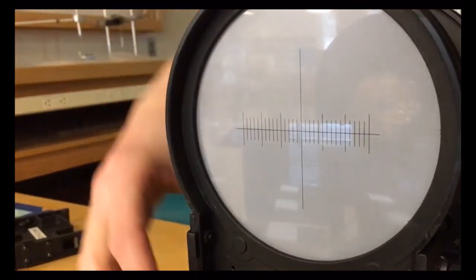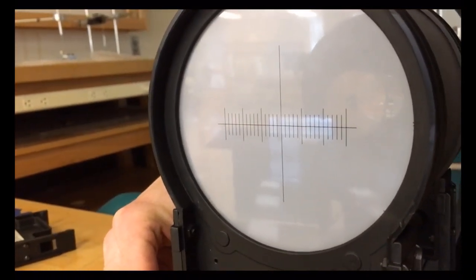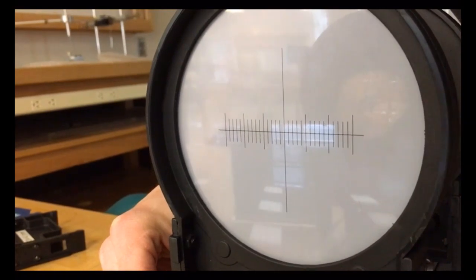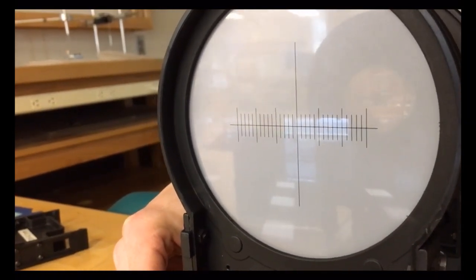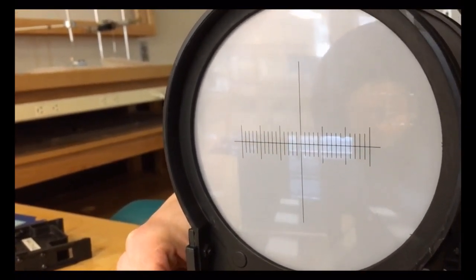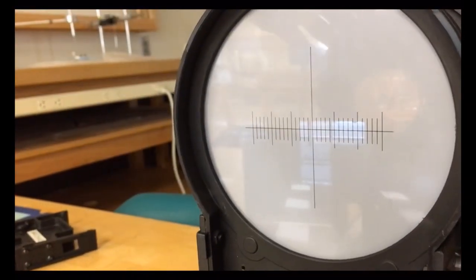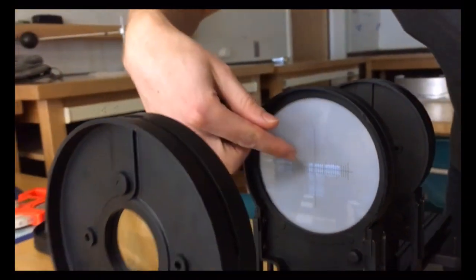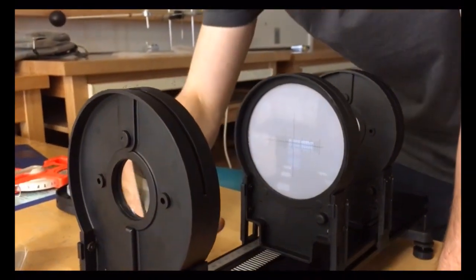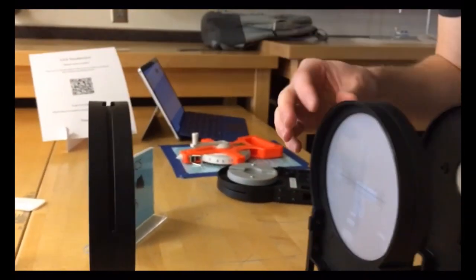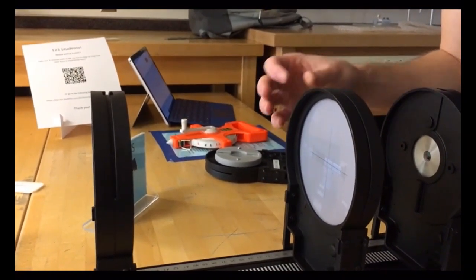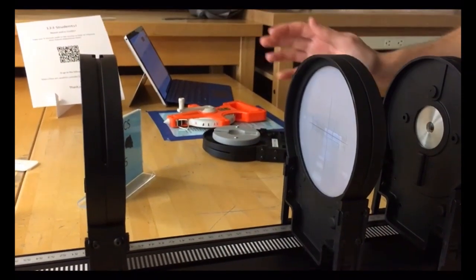And so we just adjust this until it becomes in focus. So we can see right now, we can see this pretty clearly. I go a little bit back, it went blurry. Go a little bit further forward, it's blurry again. So it looks like about right here is where it's in focus. And so the light from this window is traveling through the objective lens, focusing down right here on the screen.